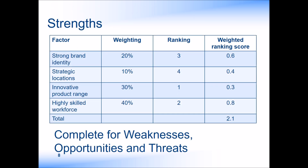The key to a good SWOT is prioritising the elements. It is possible to use a weighting and ranking system to do this. The example here illustrates where we have assigned a potential weighting of importance to the organisation to each element, and also given it a ranking. We can then create a weighted ranking by multiplying the weighting by the ranking assigned to each element, creating the weighted ranking score in the end column. We could then complete this for the weaknesses, opportunities and threats.